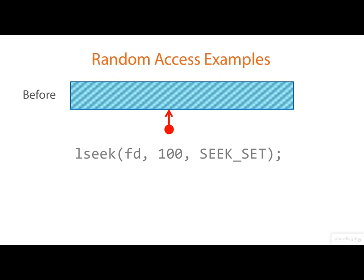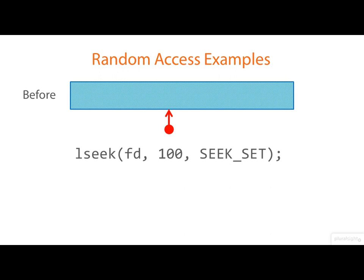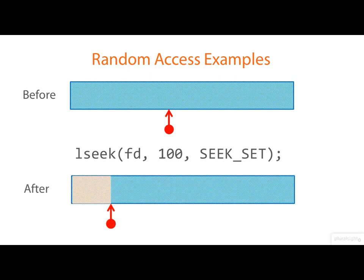Here we're seeking to an absolute offset of 100 bytes relative to the start of the file. So the file position pointer ends up here.